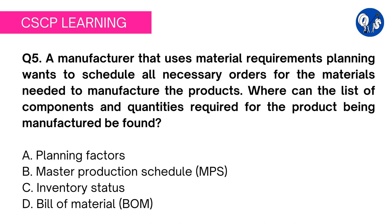Question 5: a manufacturer that uses material requirement planning wants to schedule all necessary orders for the materials needed to manufacture the products. Where can the list of components and quantities required for the product being manufactured be found? Option A: planning factors. Option B: master production schedule (MPS). Option C: inventory status. Option D: bill of material (BOM).